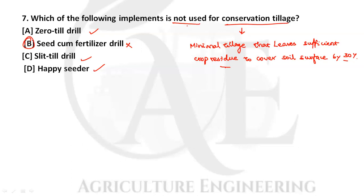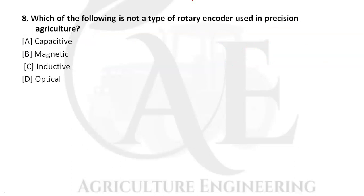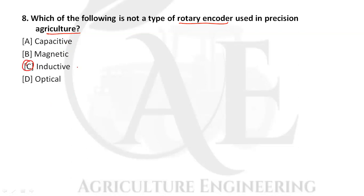Next question: which of the following is not a type of rotary encoder used in precision agriculture? The correct option is option C — inductive — it is not a type of rotary encoder used in precision agriculture.